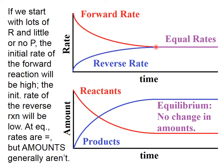At equilibrium — which is right here where this purple line starts — the rates of the forward and reverse reaction are the same. You can see in the bottom graph that, for this particular case, at equilibrium there are actually more products. There might be a larger mass of product and a smaller mass of reactant, which is typical, but the amounts will not be changing with time.